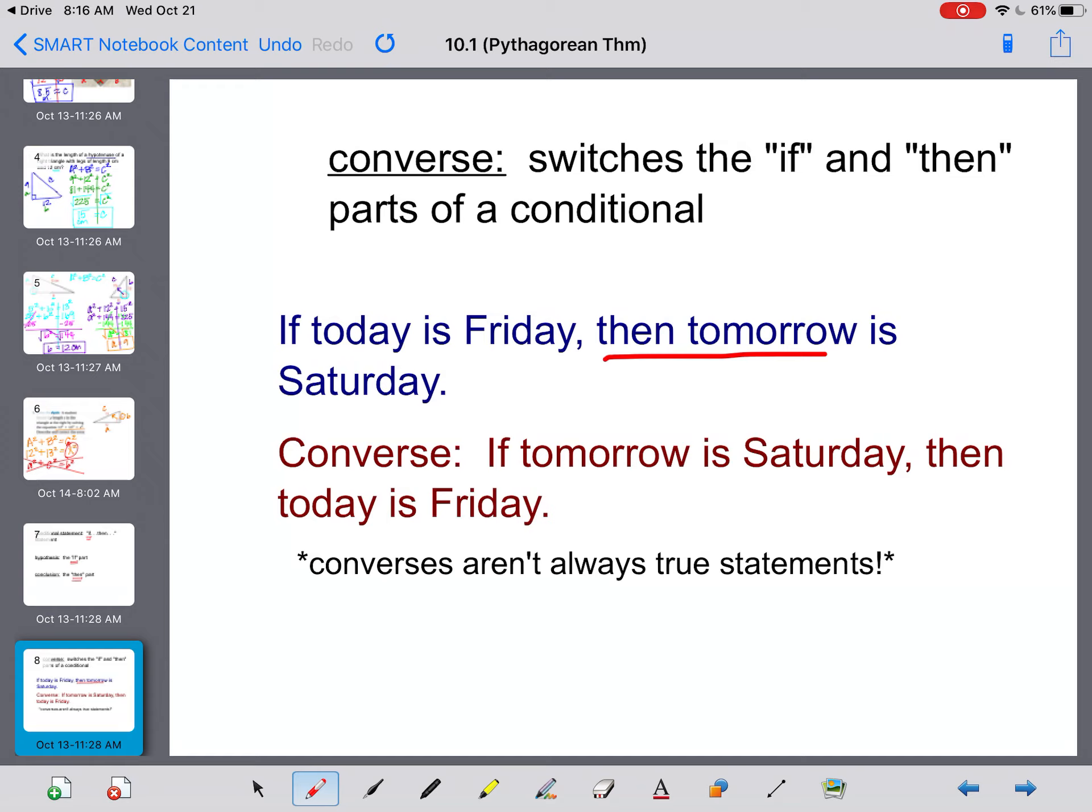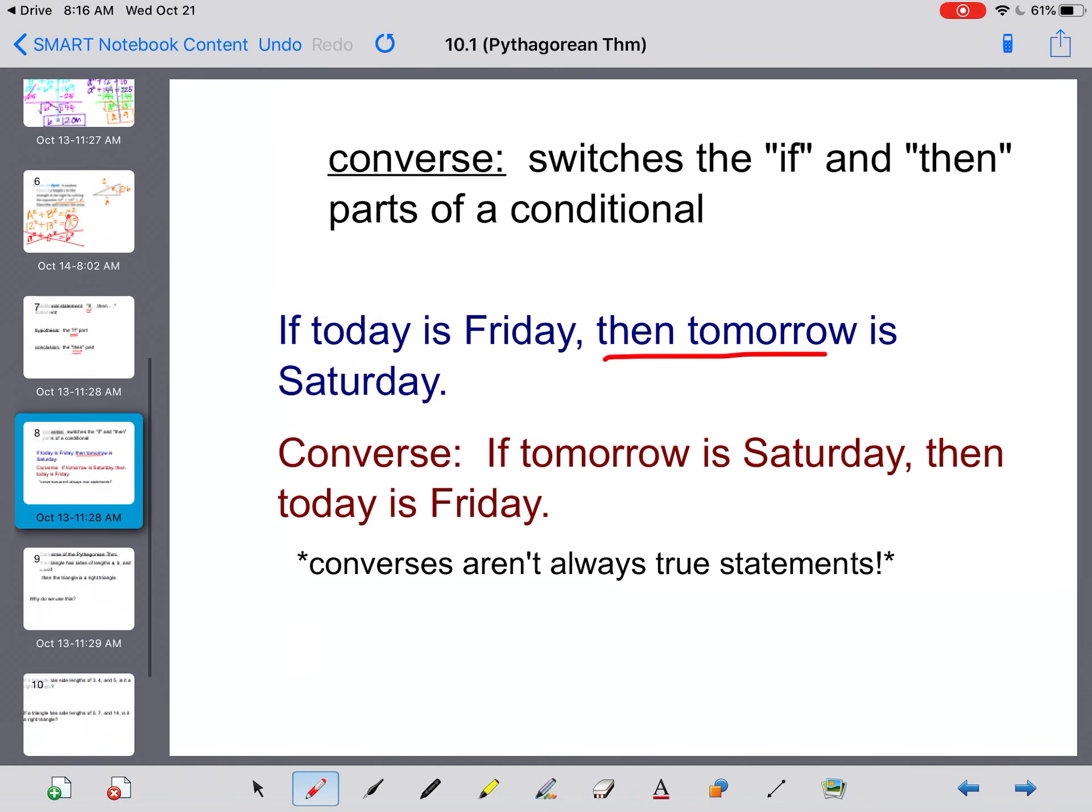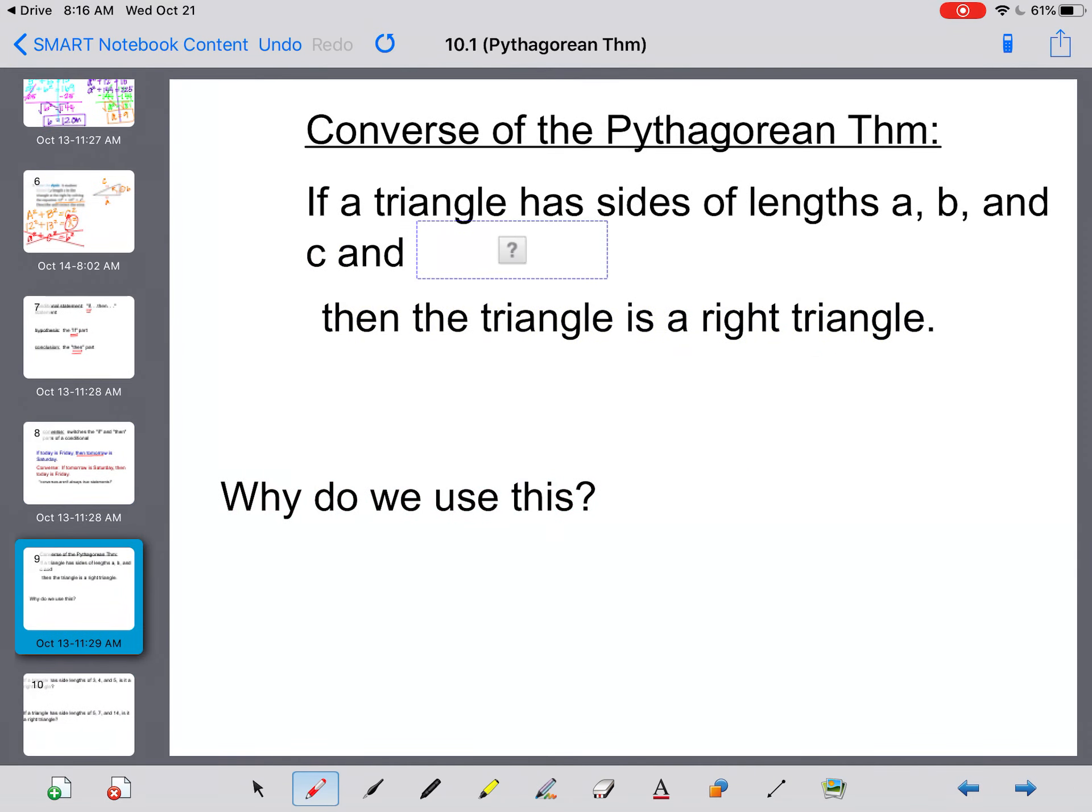So if today is Friday, kind of our hypothesis, then tomorrow would be Saturday. That's the truth, conclusion. If it's Friday, then tomorrow would be Saturday. Converse, if tomorrow is Saturday, then today is Friday. They're not always true when they go both ways, but the converse would be the opposite direction.